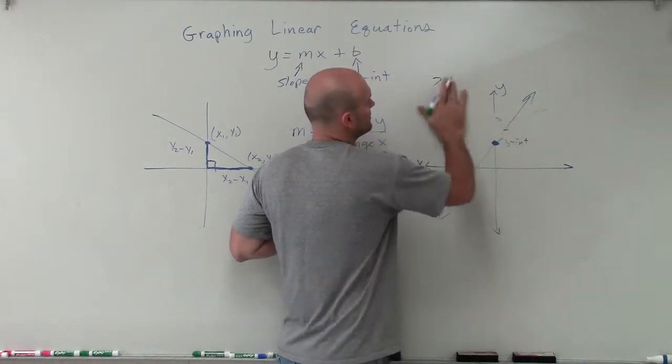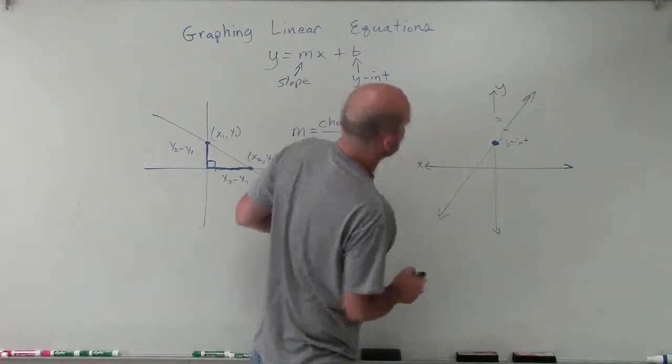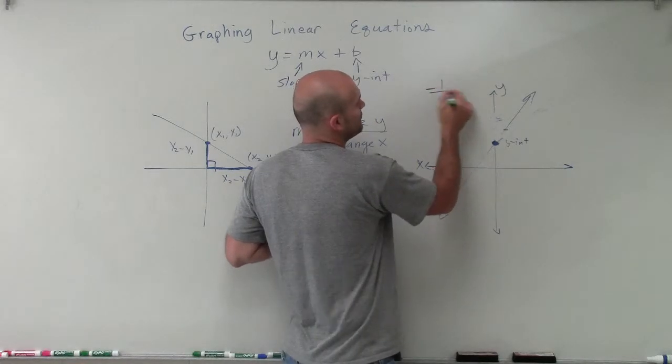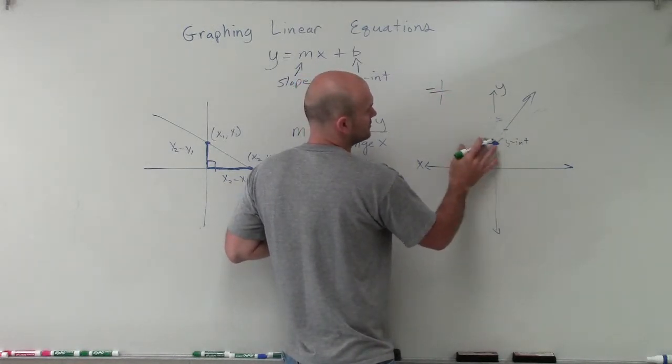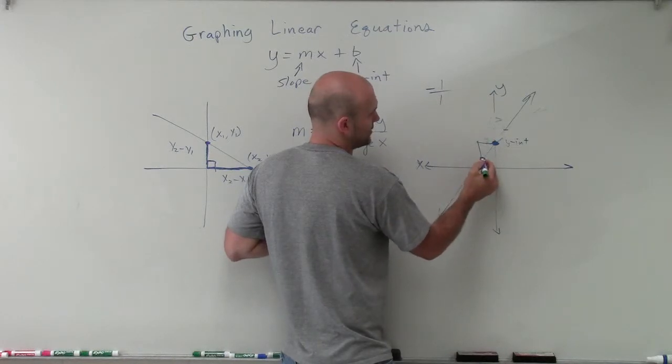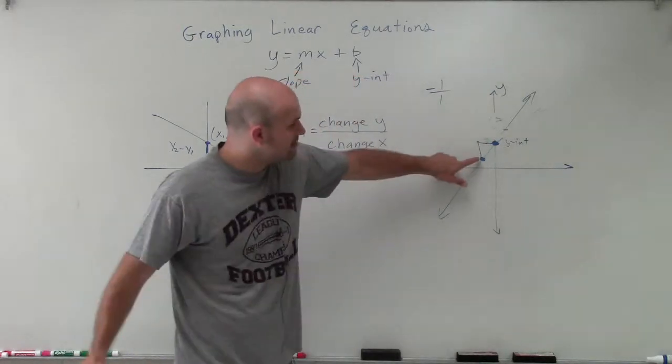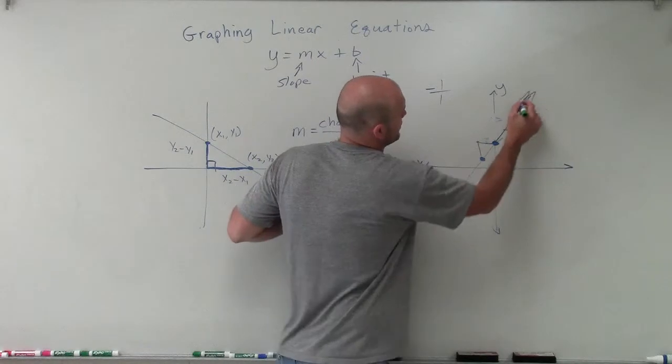However, let's say that my slope is negative 1 over 1. That means I'm going to go left 1 unit and then down 1 unit. And that's going to find me my next point, which I can then graph.